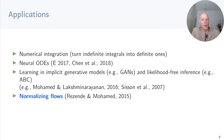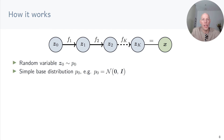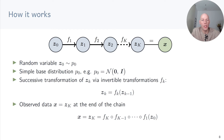Now let's go back to normalizing flows. The key idea is to construct complex distributions from simple distributions via a flow of successive invertible transformations. We start with a random variable z0 that has a simple distribution, for example a standard normal. We write down an iterative scheme to compute successive random variables zk from zk-1 via an invertible deterministic transformation fk. We do this a few times and set the observed data to correspond to the random variable at the end of the chain, so x equals z capital K. That means we know the two endpoints of the chain: the base distribution p0 and the data at the end.